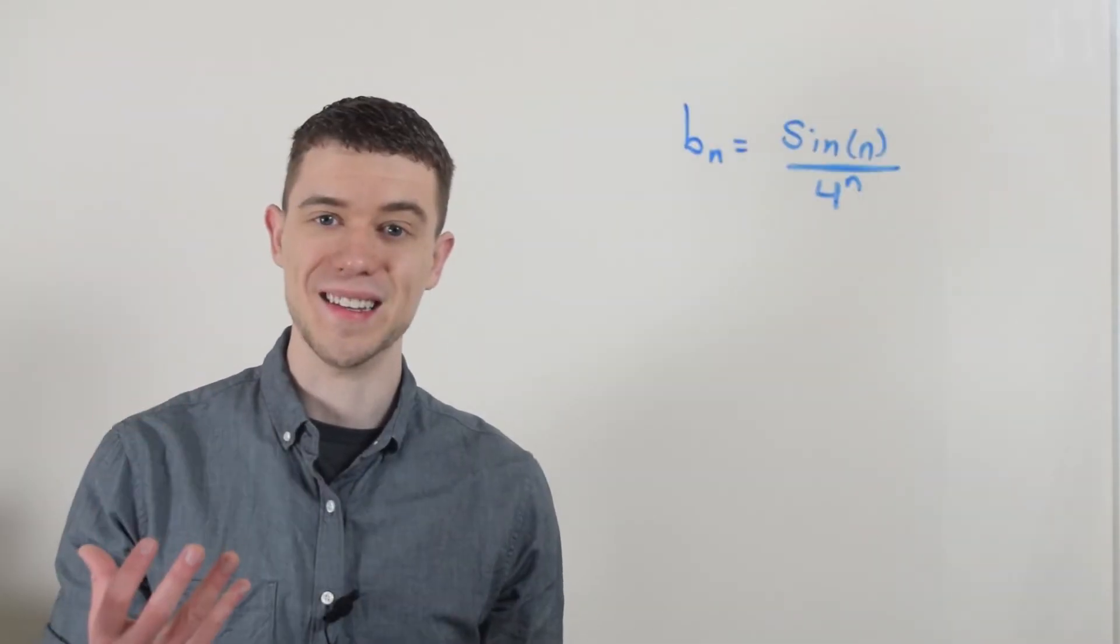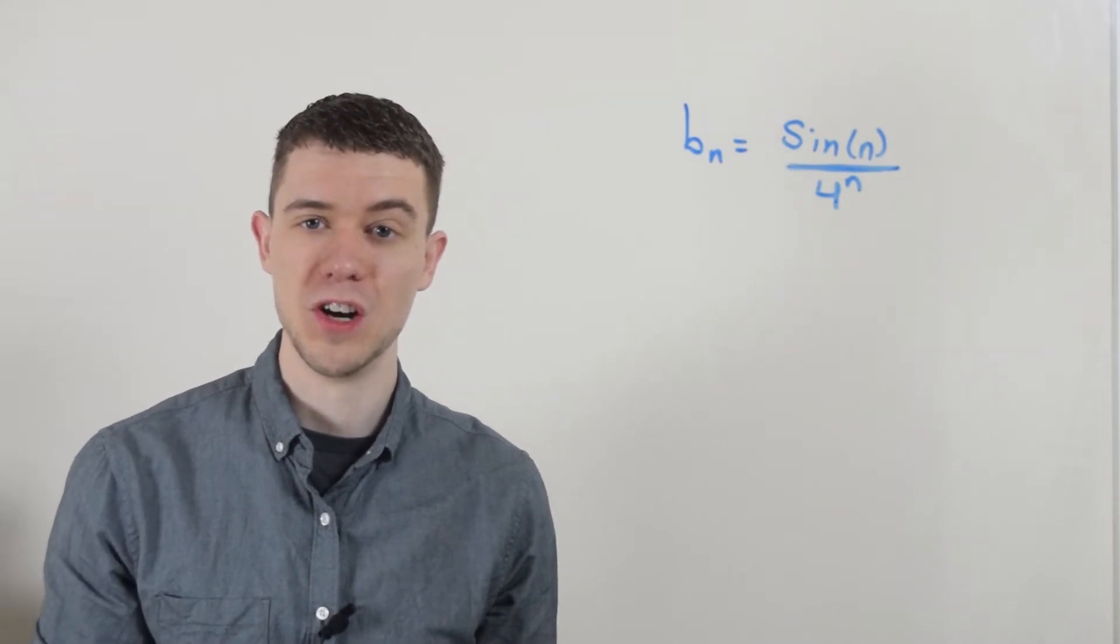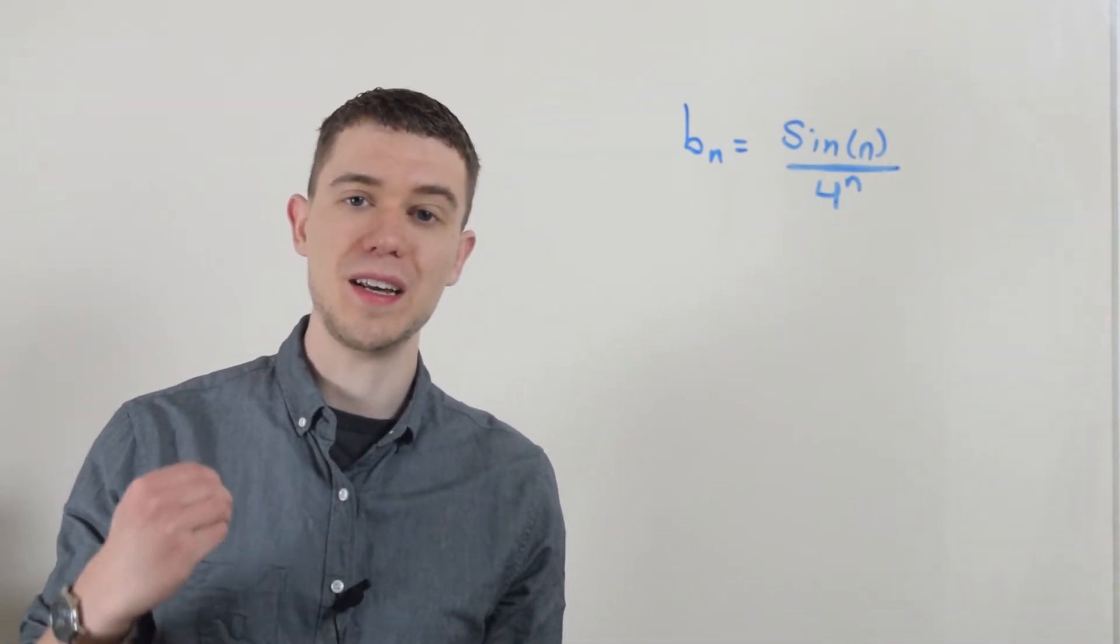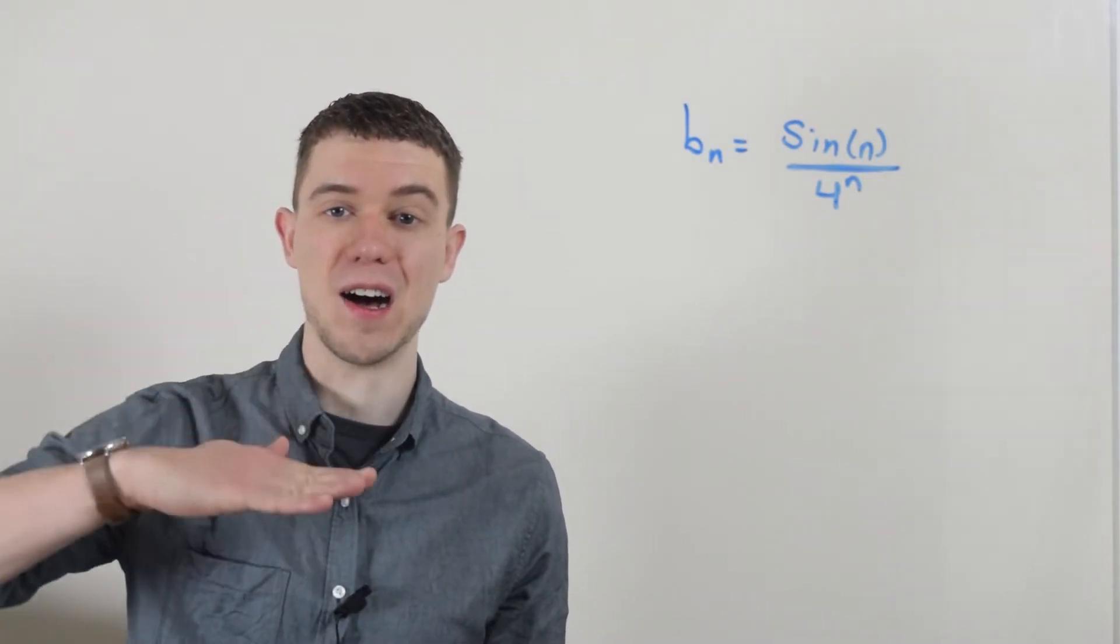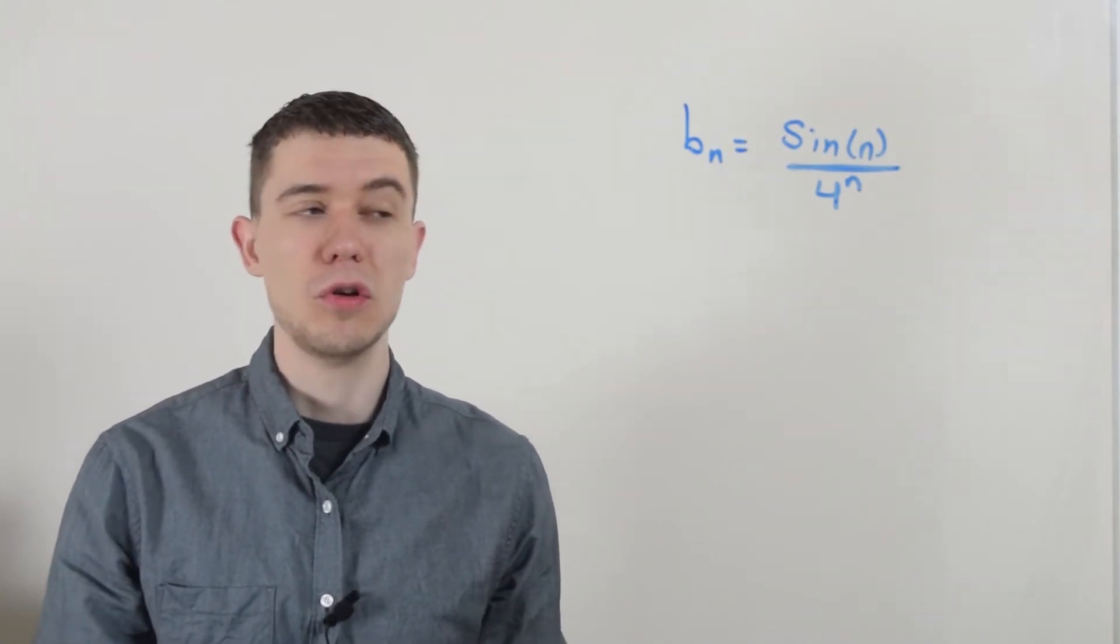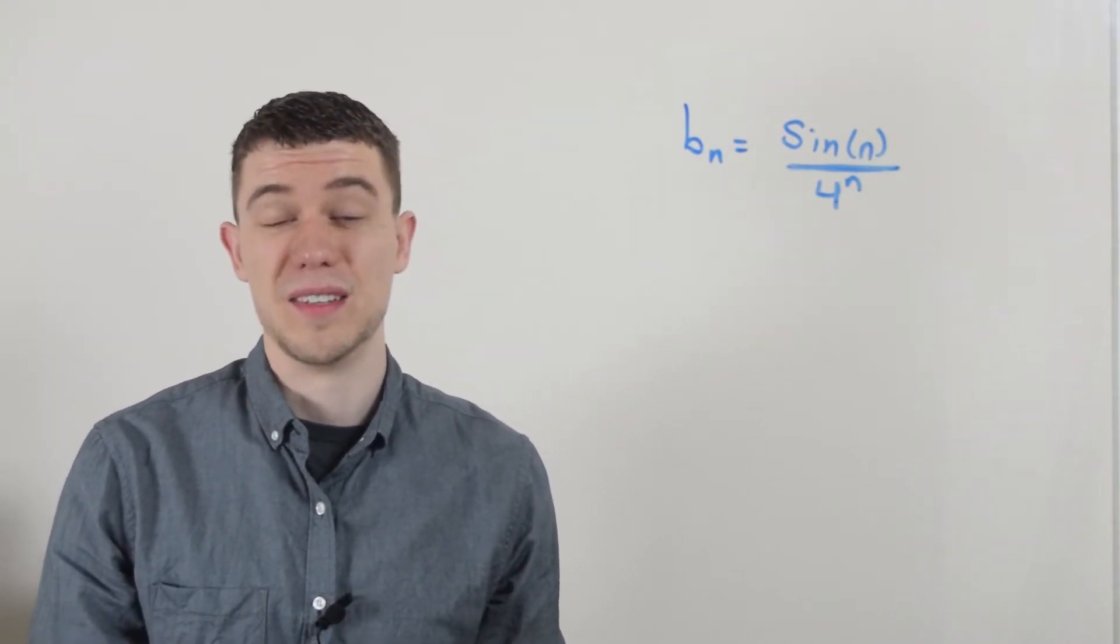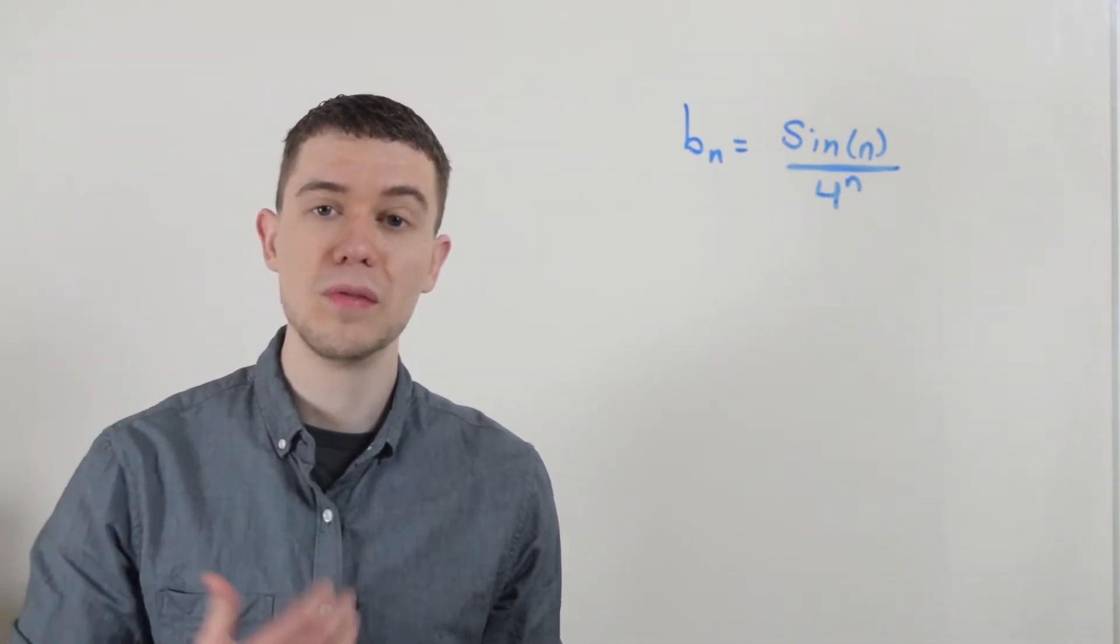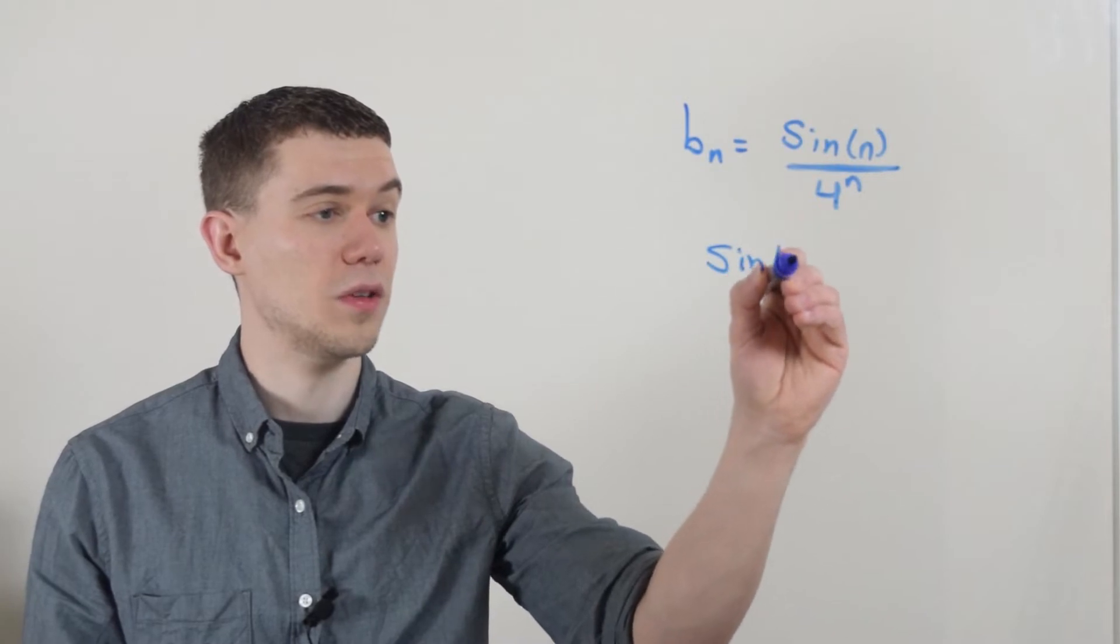Here's our second sequence: sine of n over 4 to the n. Does this sequence converge or diverge? Again we need to take the limit as n goes to infinity, but the limit as n goes to infinity of sine of n is not defined. That limit doesn't exist because sine oscillates forever. You can intuitively get the answer knowing that 4 to the n grows faster than sine of n, but that's not a perfect explanation. Some professors want a bit more of an explanation.